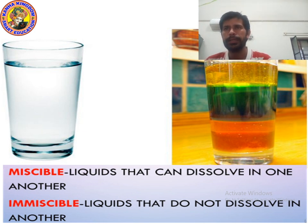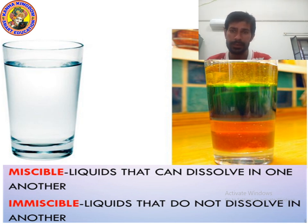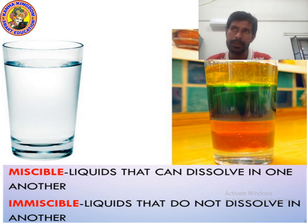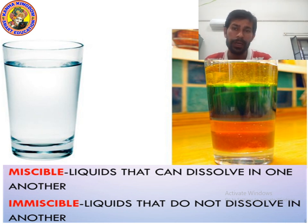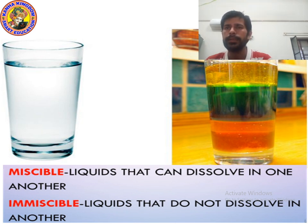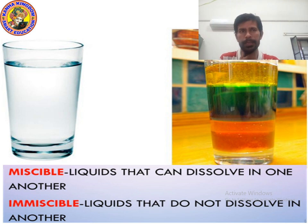And immiscible means liquids that do not dissolve in one another, which is called immiscible. For example, if I have water and I try to dissolve oil, can I dissolve oil in water? No, I cannot dissolve it. So that is the example of immiscible. I hope you understood the difference between miscible and immiscible.